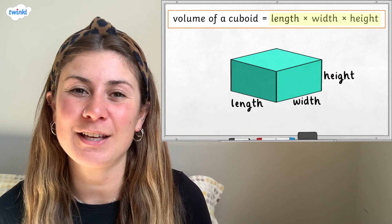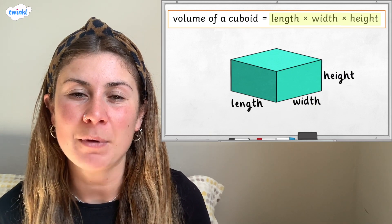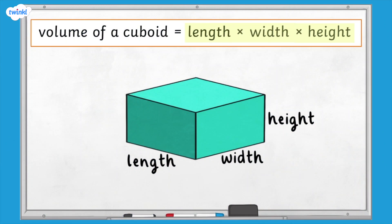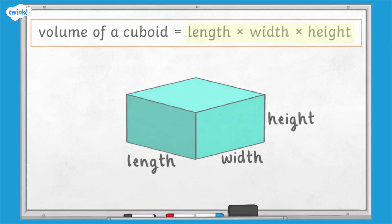It is important that the units of length are all the same before we begin to calculate the volume. For example, if one length was in millimetres and the others were in centimetres, you would need to convert all the lengths to either millimetres or centimetres before you calculate the volume.